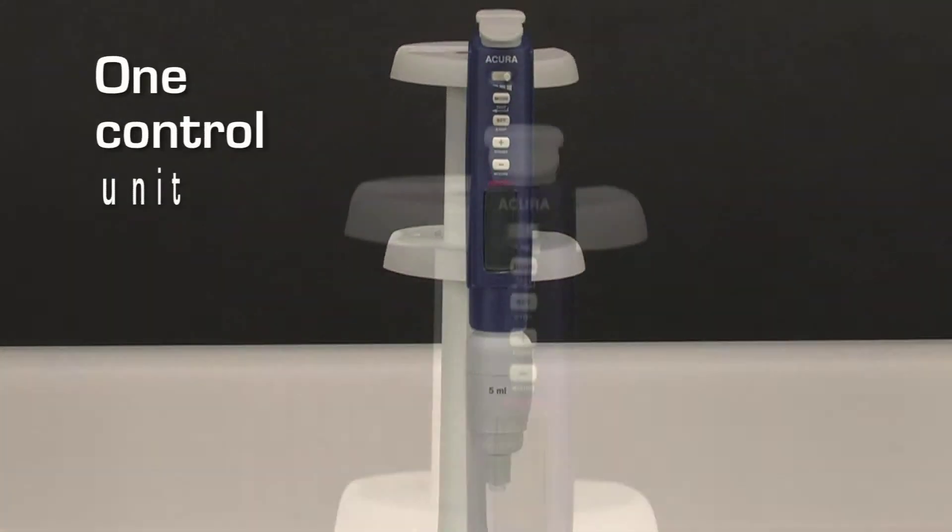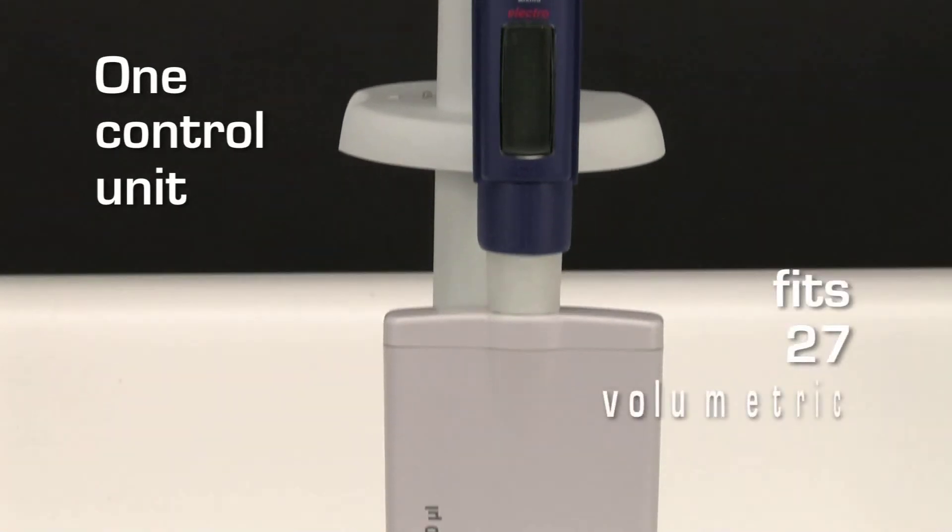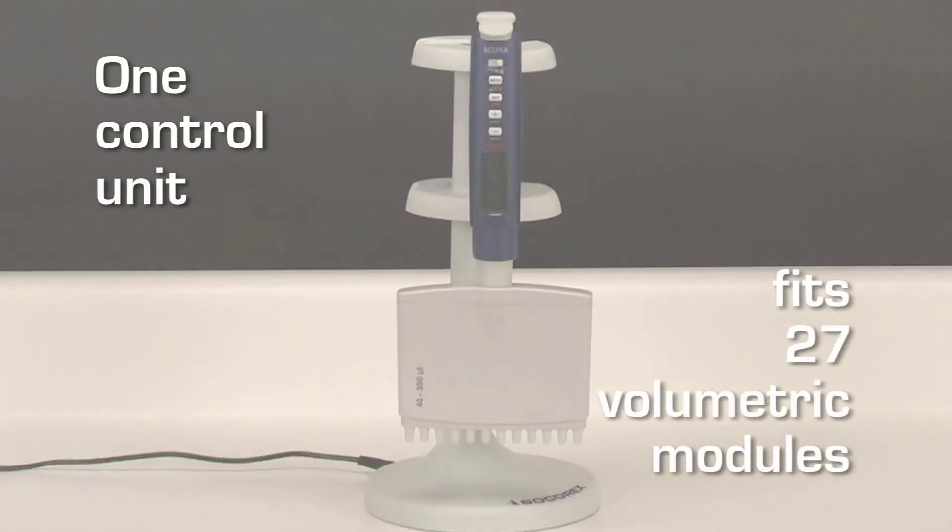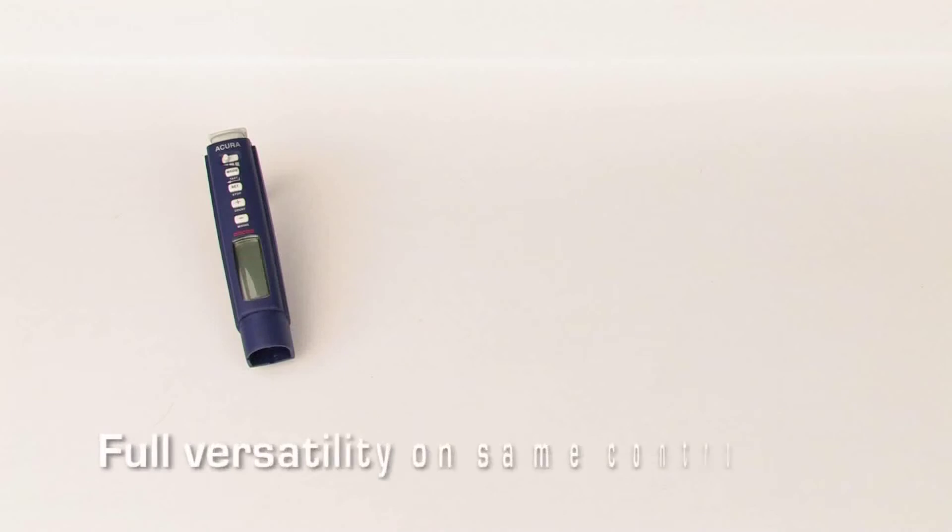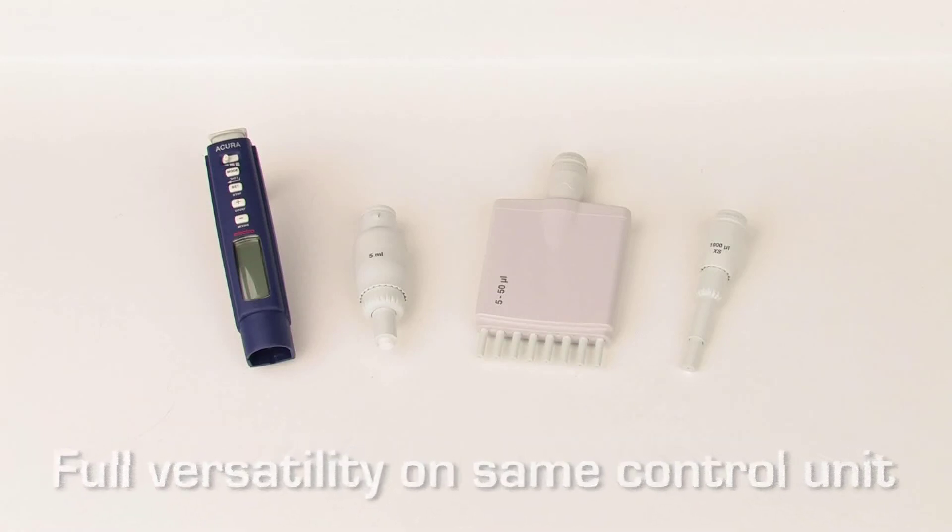Acura Electro offers 27 volumetric modules, which are interchangeable on any control unit. Every volumetric module will fit on every control unit, making electronic pipetting more flexible and affordable for all budgets.